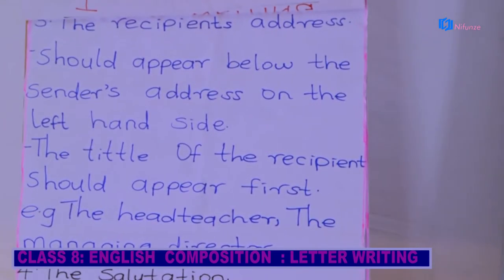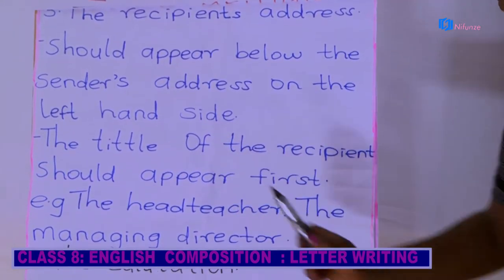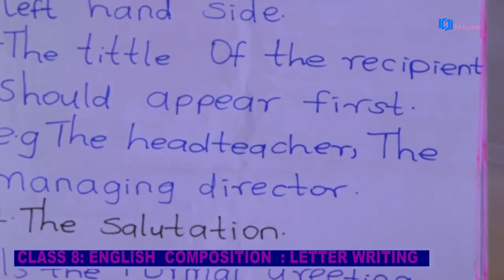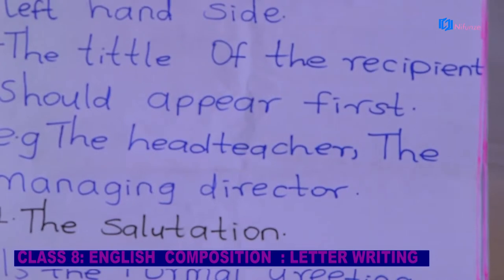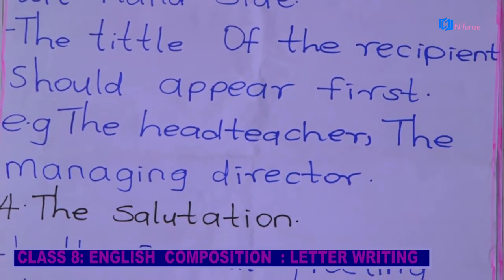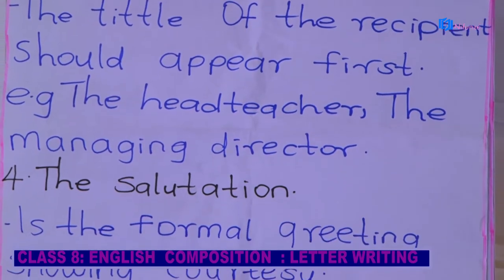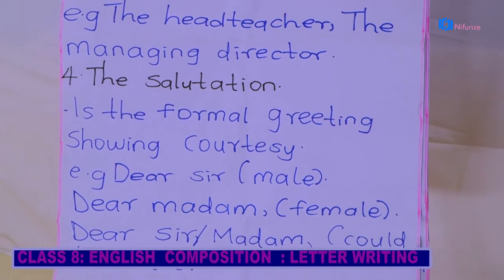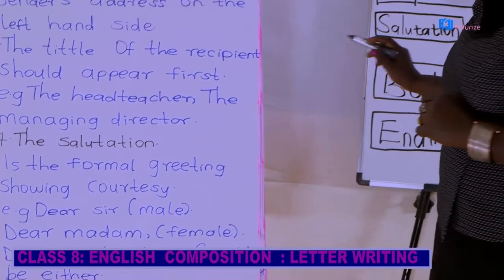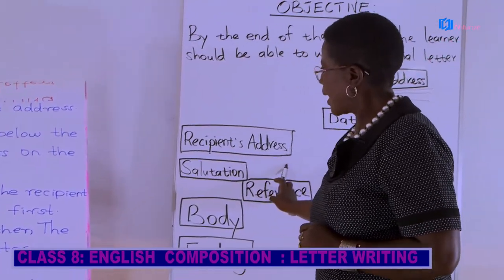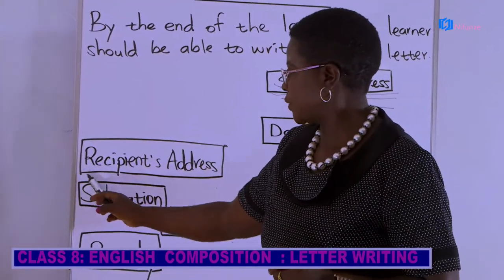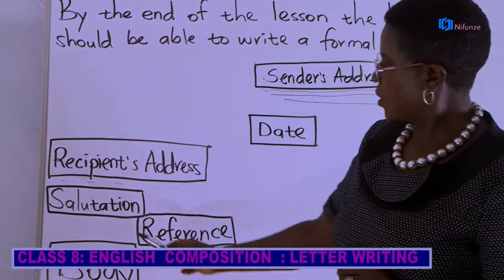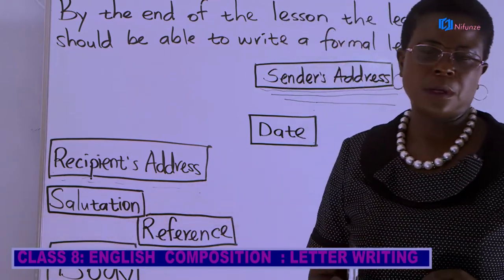The recipient's address appears just below the date but on the other side. Before you write the address, you need to write the title of the recipient. For example, if you are writing to the head teacher, you write 'The Head Teacher.' If writing to a company, you might write 'The Managing Director,' followed by the name of the school or organization.